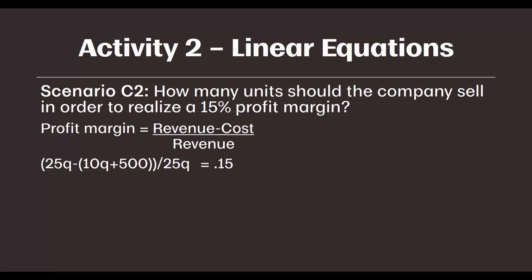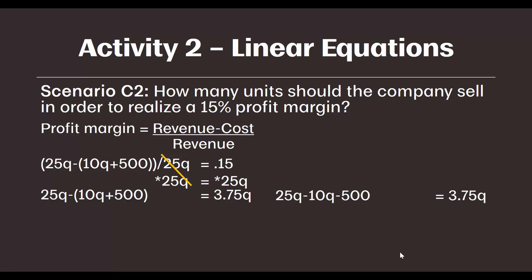Welcome back. Hopefully you got the right answer on your own. If not, let's walk through the algebra. The first thing I want to do is multiply by 25Q on each side of this formula. Doing that on the left side of the equal sign cancels out the 25Q that we were using to divide the formula, and doing that on the right side gives us 3.75Q. So all that's left is that profit formula equals 3.75Q. The next thing we need to do is distribute this negative to the 10Q and the 500, and now our formula looks like this: 25Q minus 10Q minus 500 equals 3.75Q.